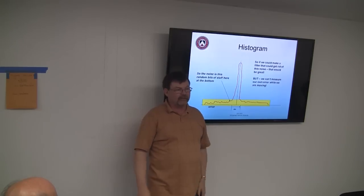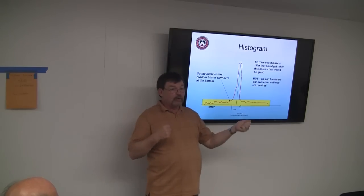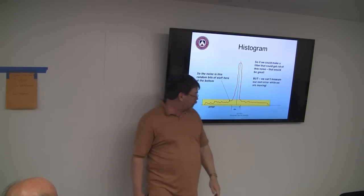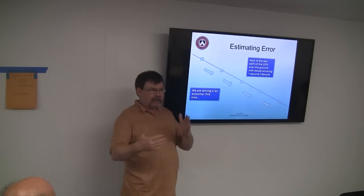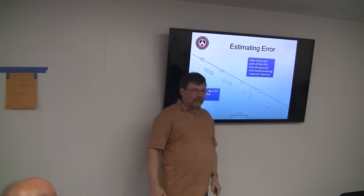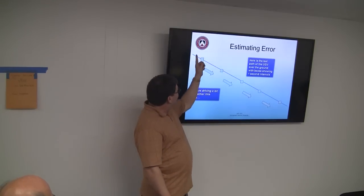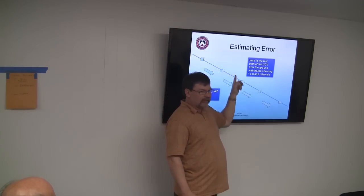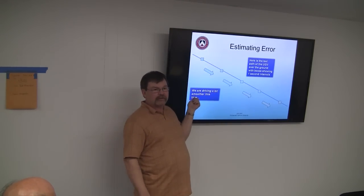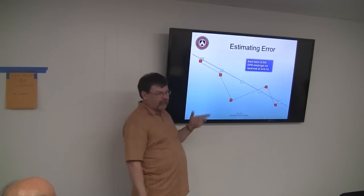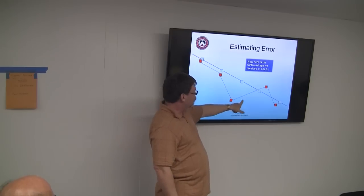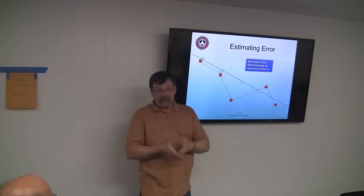So let's talk about how we estimate error on the move. Here's our unmanned vehicle going along the ground at an equal interval — in this case a straight line at constant speed, so the one-second interval dots are evenly spaced. Next, here are the readings we got from our GPS. We get a pretty good reading, then a sort of good reading, then something bad — it's worse when you're under a bridge.